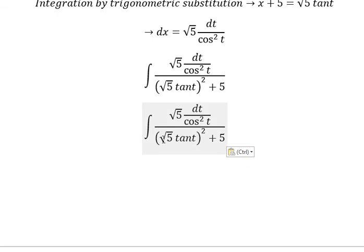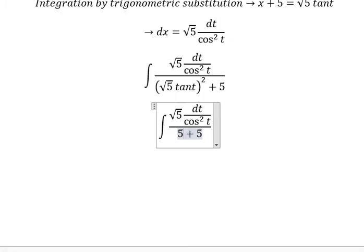We have square root of 5 times tan t, everything squared, which gives us 5 times tan² t. So we factor out 5 and square root of 5 outside. We get tan² t plus 1, and dt over cos² t.